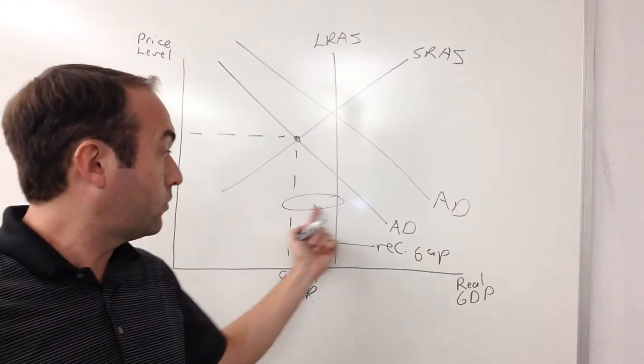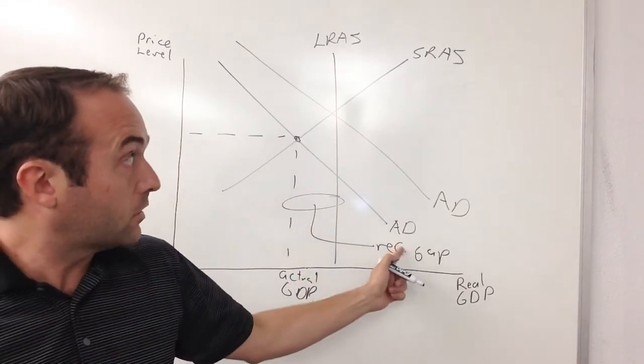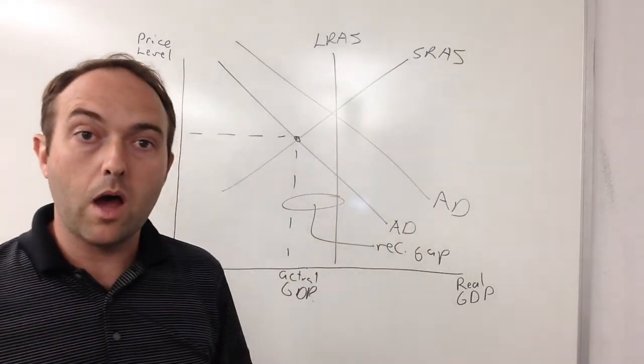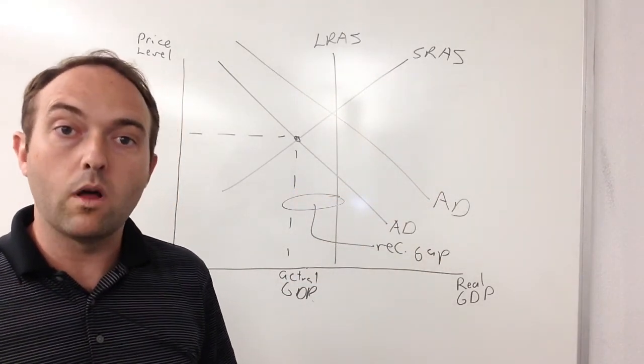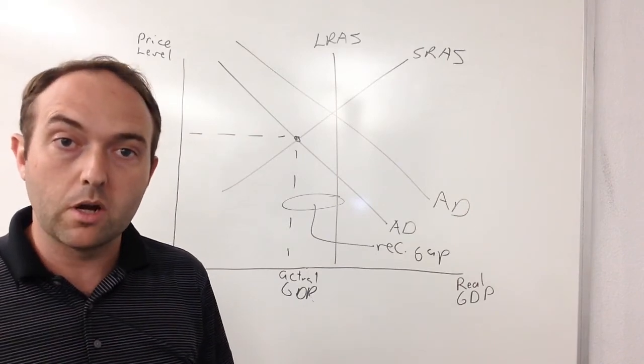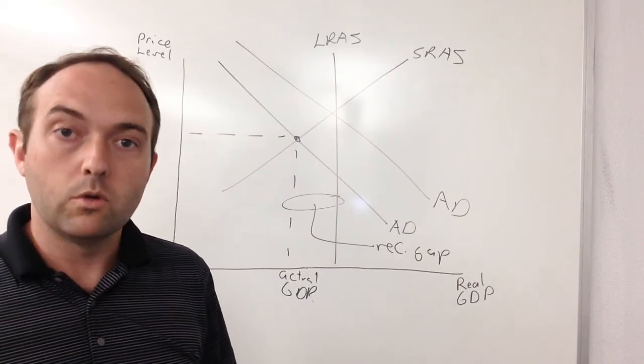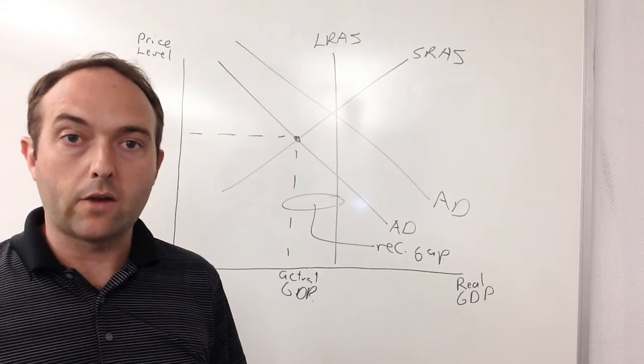Either way, if a country has a recessionary gap, either aggregate demand or short-run aggregate supply is going to have to increase if you want that gap to close and for a country's actual production to equal its potential, which is represented as long-run aggregate supply.